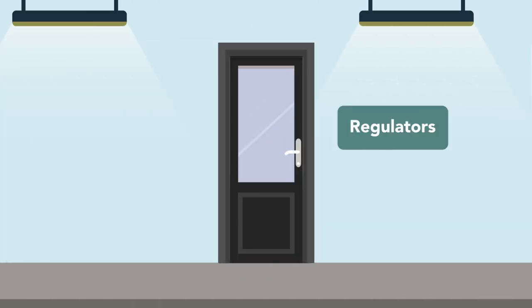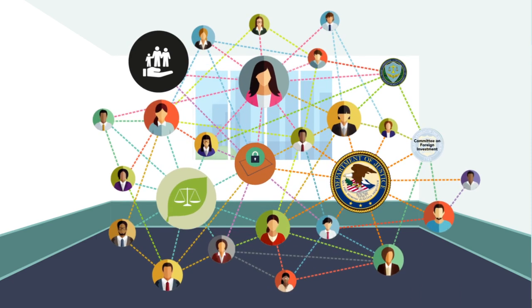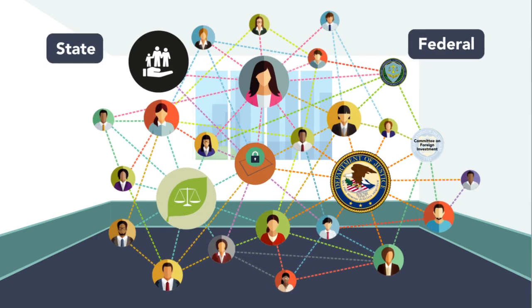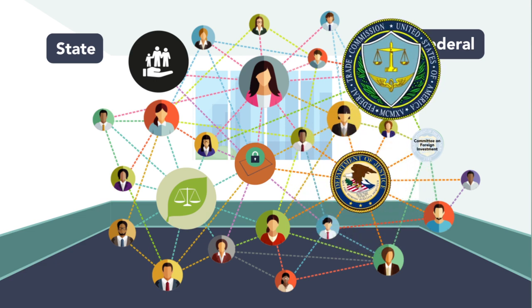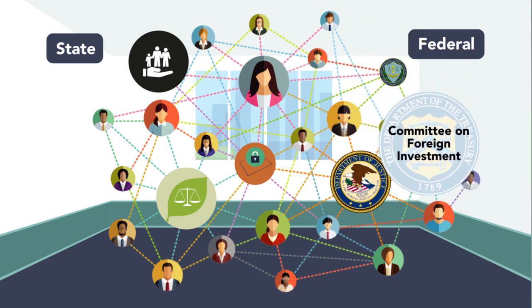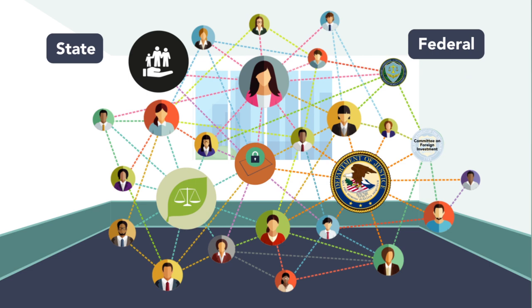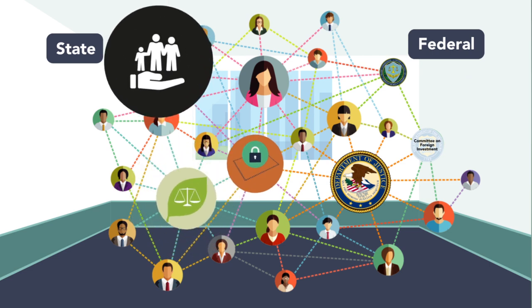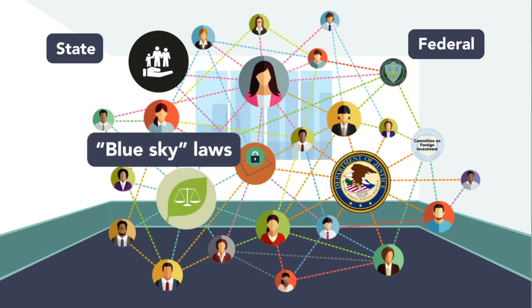Three: regulators. Acquirers face complex webs of regulations and regulators both at the state and federal levels. Federal regulators include the DOJ, FTC, and the Committee on Foreign Investment where cross-border transactions are concerned. State laws impacting mergers may include environmental, employee benefits, or state securities laws, sometimes referred to as blue sky laws.